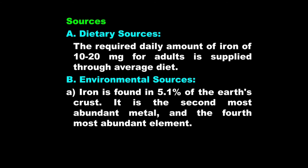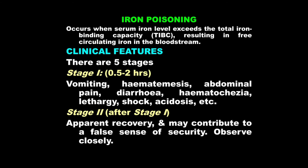When serum iron level exceeds the total iron binding capacity (TIBC), there is free circulating iron in the bloodstream and clinical features of iron toxicity present in five stages. Stage one occurs about half an hour to two hours after exposure: vomiting, hematemesis (vomiting of frank blood), abdominal pain, diarrhea — often with hematochezia (frank blood in stools, not to be confused with melena, which is altered blood giving tarry or blackish stools). There is also lethargy, shock, and metabolic acidosis.